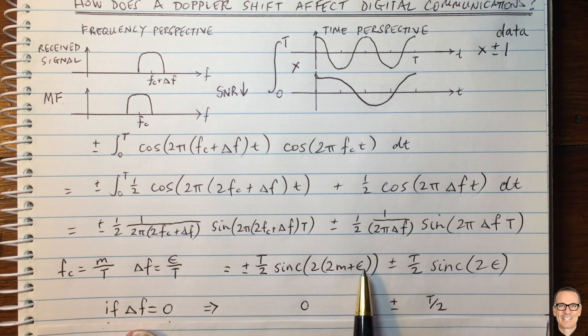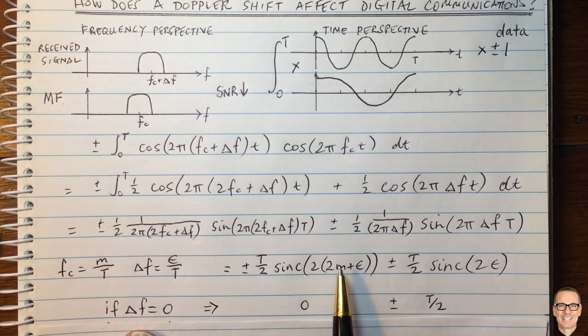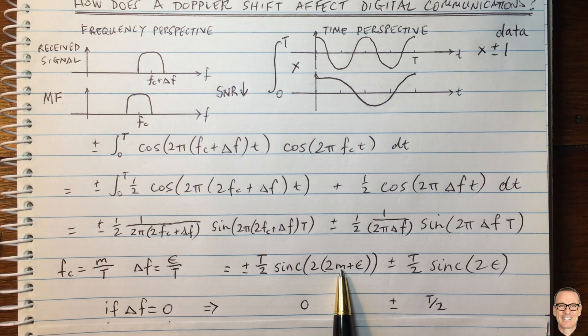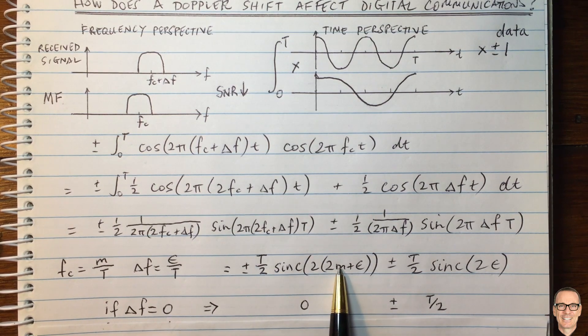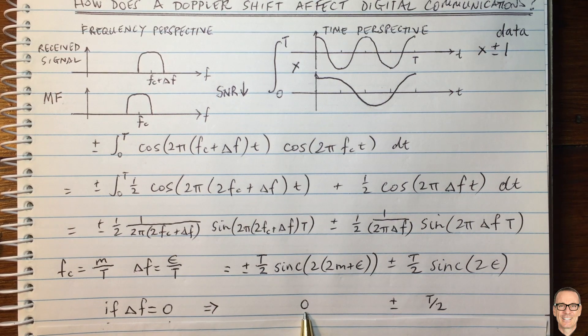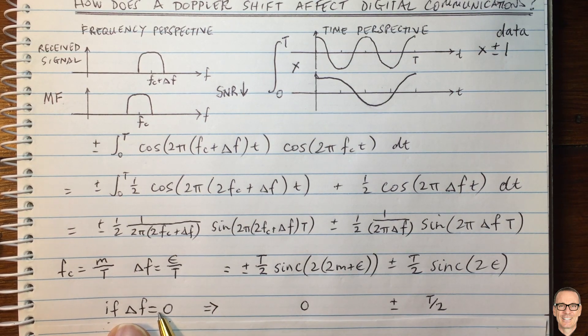And what about this term? When delta F equals zero, epsilon is zero. Well, you put epsilon zero in here, and M is an integer. And when you've got a sinc of an integer, then that equals zero.